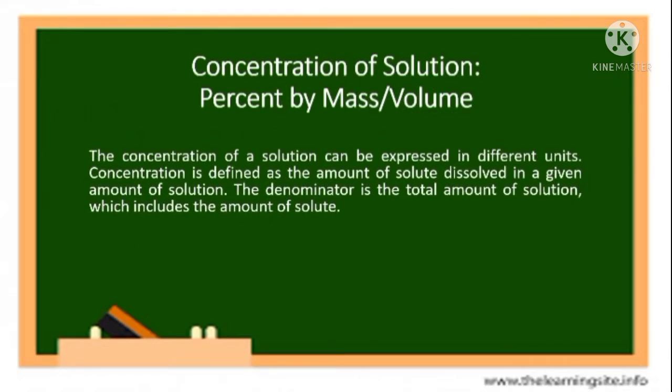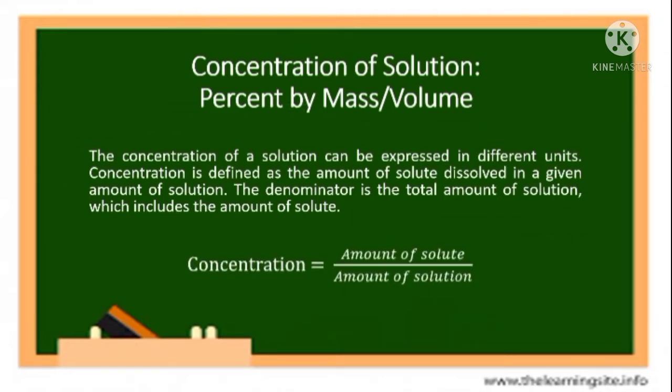In concentration of solution through percent by mass and volume, the concentration of a solution can be expressed in different units. Concentration is defined as the amount of solute dissolved in a given amount of solution. The denominator is the total amount of solution, which includes the amount of solute. Therefore, the general equation is: concentration equals amount of solute over amount of solution.